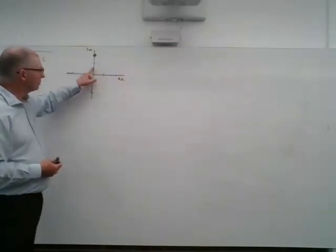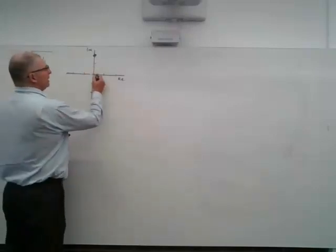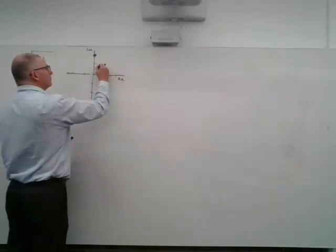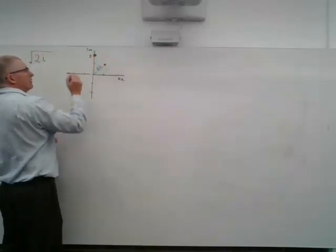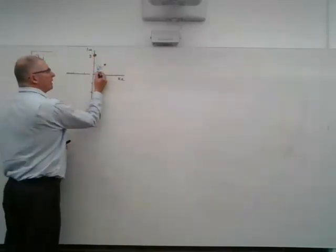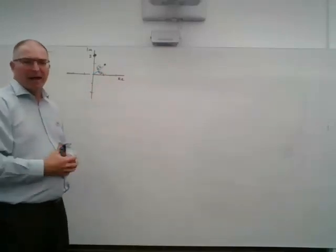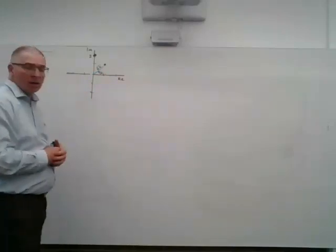The argument is pi on 2, so we're going to be out here at a length of root 2, since that's 2 up to there, and we're going to have an argument of pi on 4, because that's half the argument of the original number 2i.